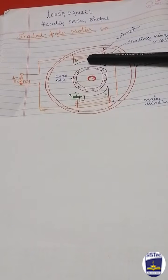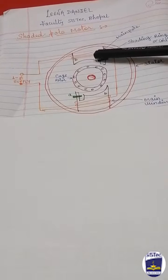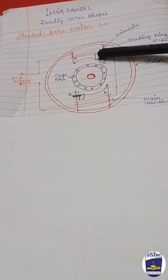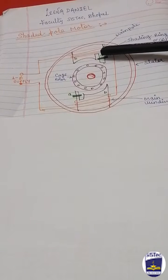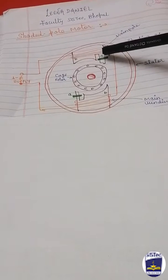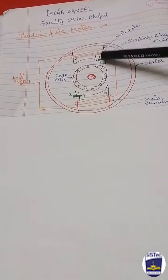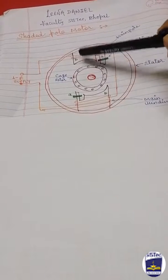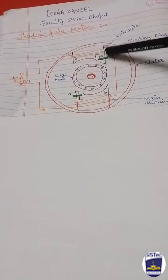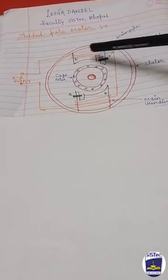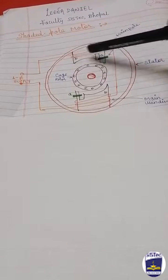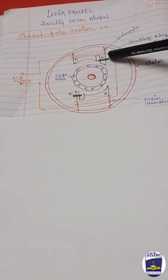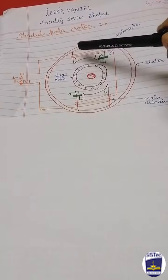This shading coil causes the flux in the shaded portion A to lag behind the flux in the unshaded portion B of the pole. The flux in part A lags because of the flux linkages in the shaded coil. The flux in portion B leads the flux in portion A.